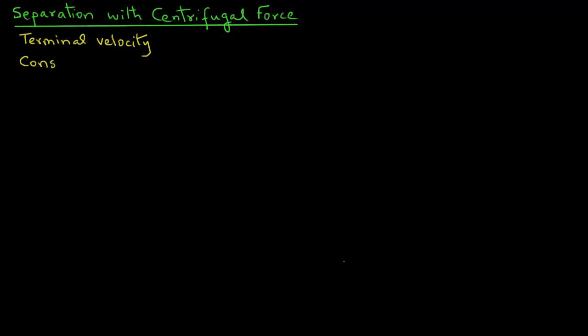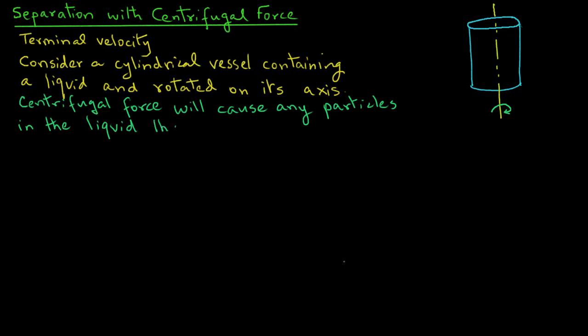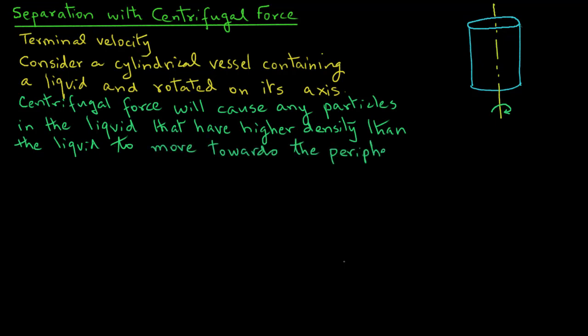Now consider that we have a cylindrical vessel that contains a liquid, and this vessel is rotated on its axis. The centrifugal force will cause any particles that may be present in the liquid that have higher density than the liquid to move towards the periphery of this vessel.